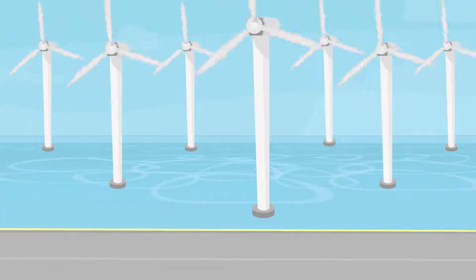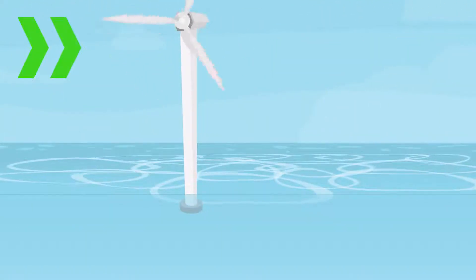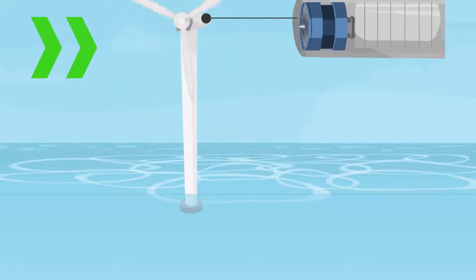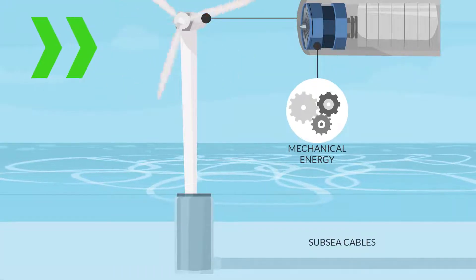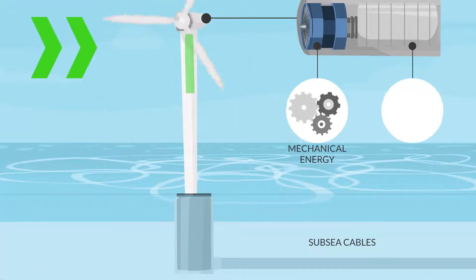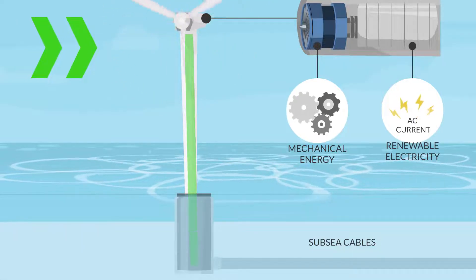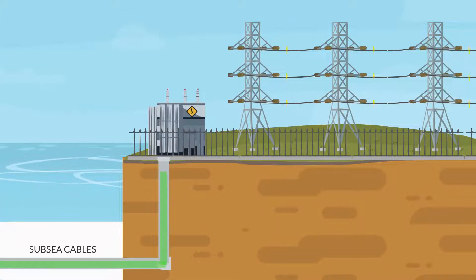How do offshore wind turbines generate electricity? As the wind blows, the spinning blades of the wind turbine drive the generator, converting mechanical energy into clean, renewable electricity. The generator produces an alternating current, AC, which a transformer transforms into a higher voltage to reduce transmission losses. Subsea cables transmit the electricity from the offshore wind farm to the onshore grid.